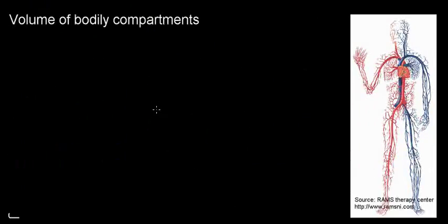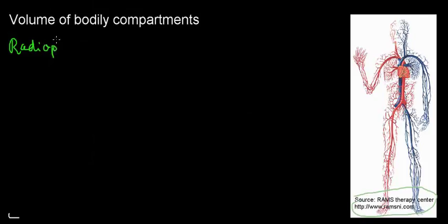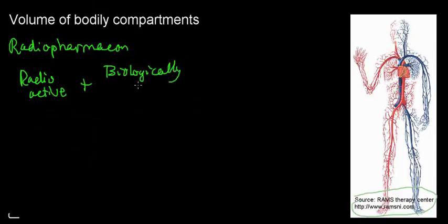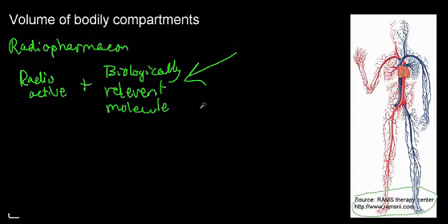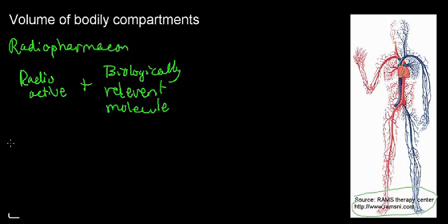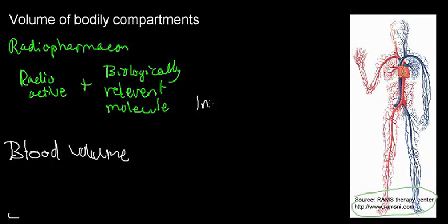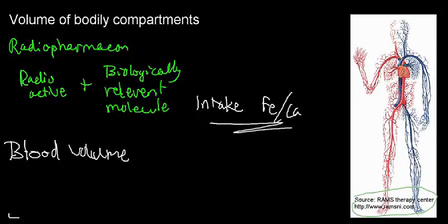Now let's talk about how we can measure the volume of bodily compartments. I can use a radiopharmacon again — a radioactive isotope coupled with a biologically relevant molecule. Because I know what molecule I'm using, I can specifically target molecules that will diffuse throughout the blood if I want to measure blood volume. Or I can measure specific functional intakes, like the intake of iron, calcium, or iodide in the thyroid gland.